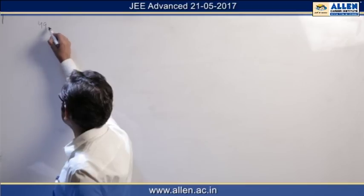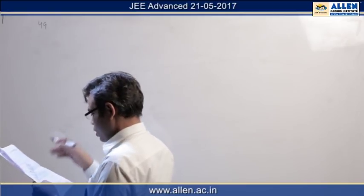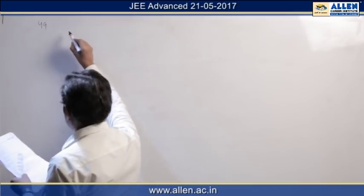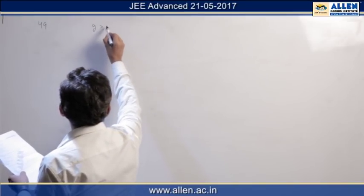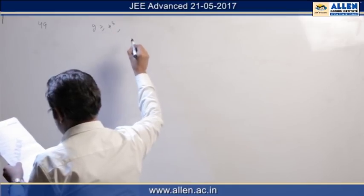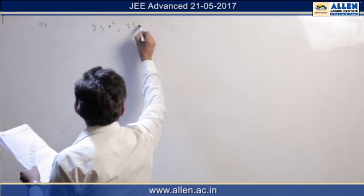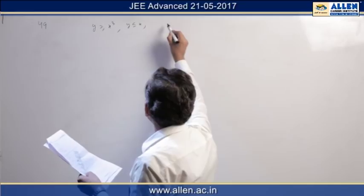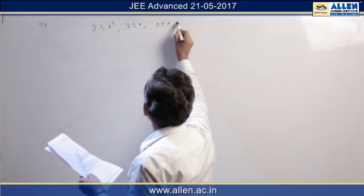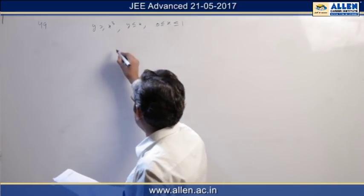Question number 49. This question is from area. So we have two curves: one is y ≥ x³, the other is y ≤ x, and third is x ≥ 0 and ≤ 1. So let us draw the curve.